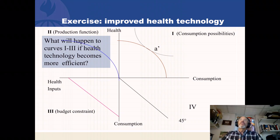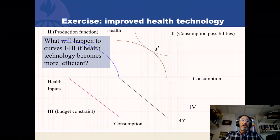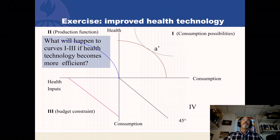So this is the basic introduction to the Grossman model of health demand and I hope you enjoy it. We're going to talk about what it implies and what its predictions are in part two, when we talk about the marginal efficiency of capital.